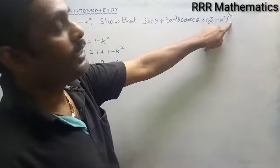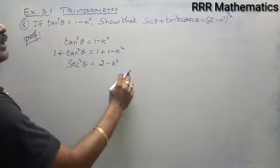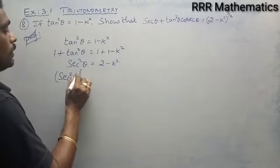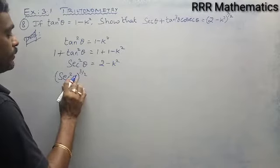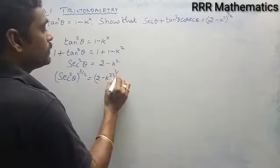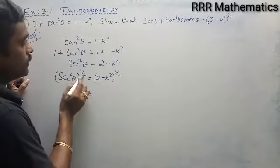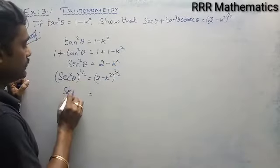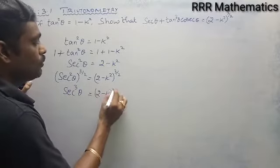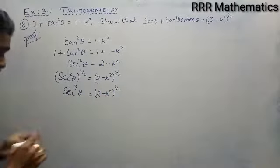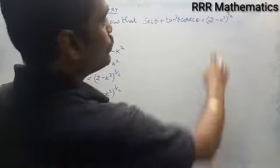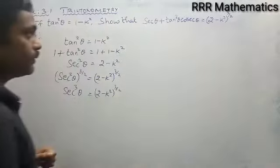We have the power 3 by 2, so raising the power 3 by 2 on both sides: secant squared theta whole power 3 by 2 equals 2 minus k squared whole power 3 by 2. The 2 gets cancelled, giving secant cube theta equals 2 minus k squared whole power 3 by 2. So I am getting my right hand side from this simplification.